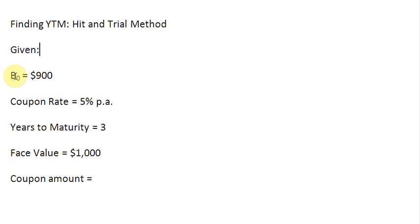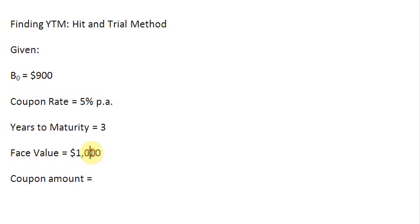Let's look at it. The current price of the bond, B0, is given to us as $900. The coupon rate is given to us as 5% per annum. And there are 3 years remaining to maturity. The face value of the bond is $1,000.